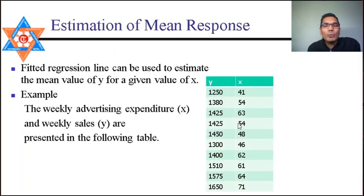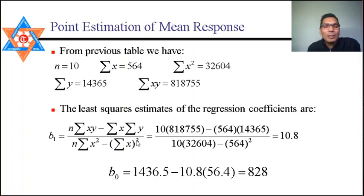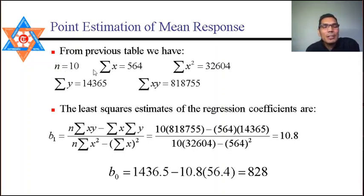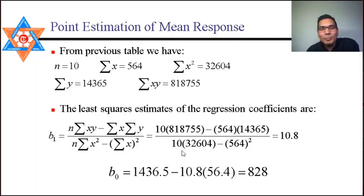From the data we calculate Σy, Σx, Σxy, Σx², and Σx (summation of x). With 10 pairs of observations, Σx = 564. Substituting all values into the formula, we get b₁ = 10.8 and b₀ = ȳ − b₁x̄ = 828. So the regression equation is ŷ = 828 + 10.8x.